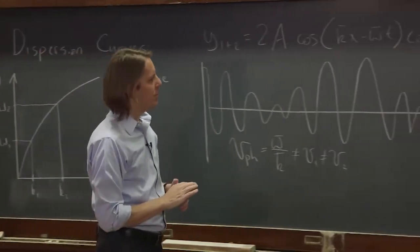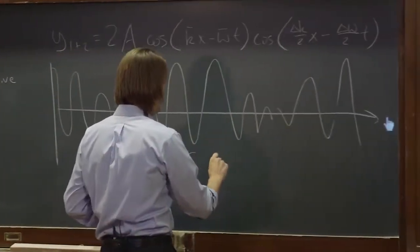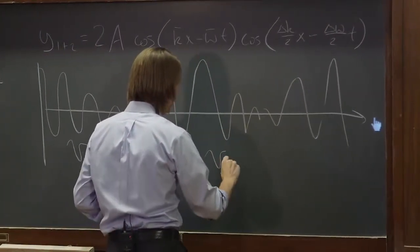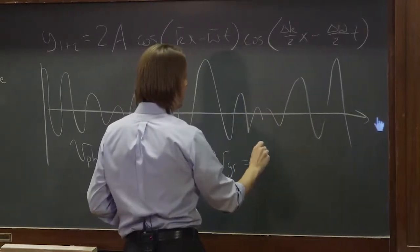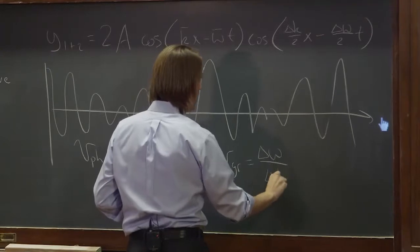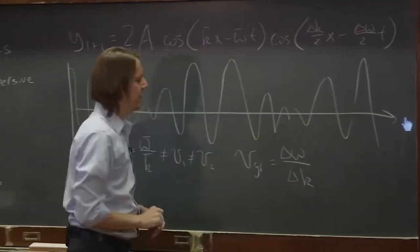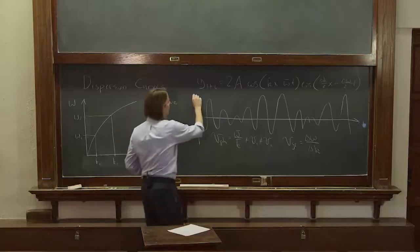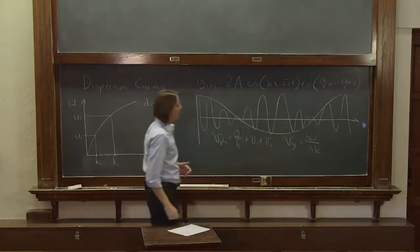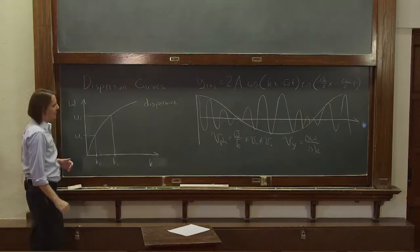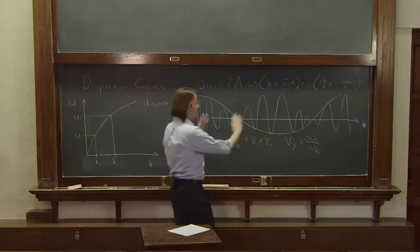The interesting one here is then the group velocity, and that, again, is delta omega over delta k. So the envelope function. And in this case, it's not the same as any of these. It's not the same as v1. It's not the same as v2.